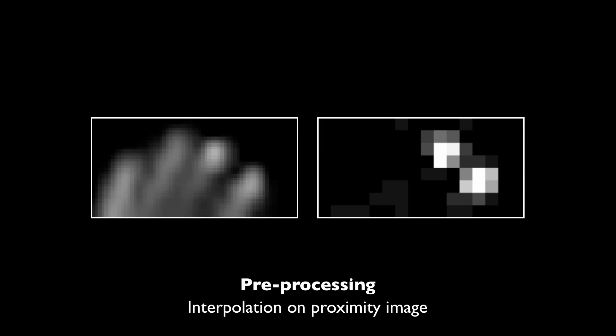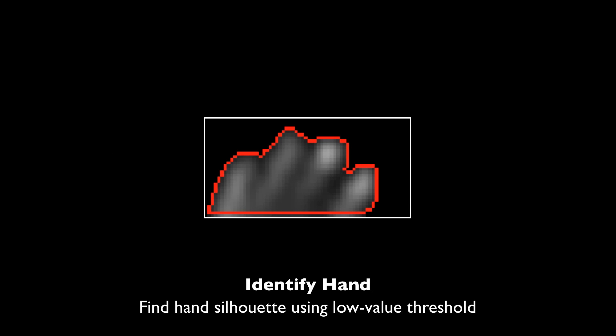Before image processing, we first interpolate the proximity image. To identify hand, we find silhouette using low-value threshold and estimate the inclination of it.